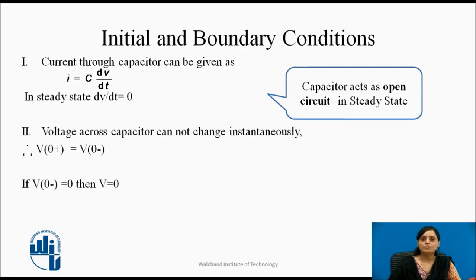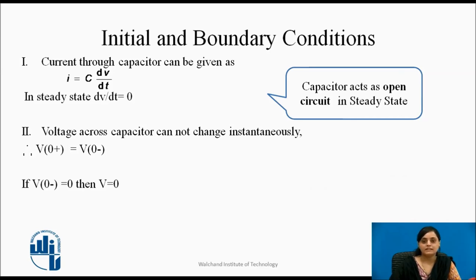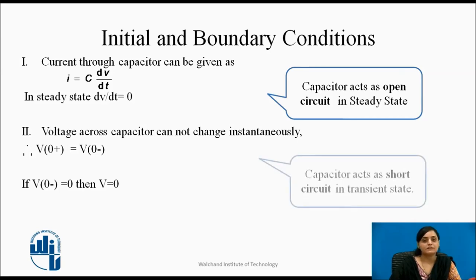The capacitor has the property that the voltage across it cannot change instantaneously or suddenly. Therefore, if the voltage across the capacitor is zero in the initial conditions, it indicates that the capacitor acts as a short circuit in the transient state.